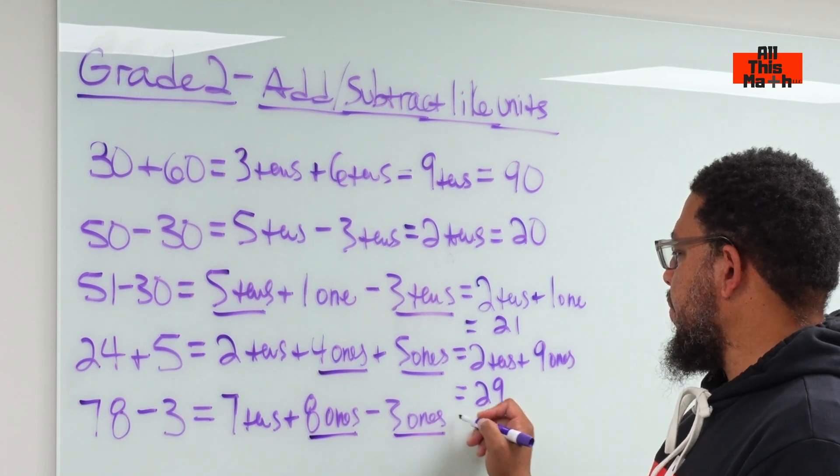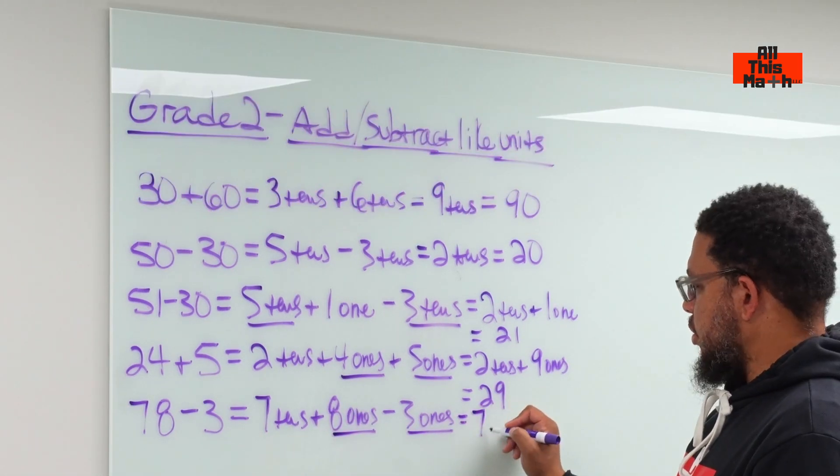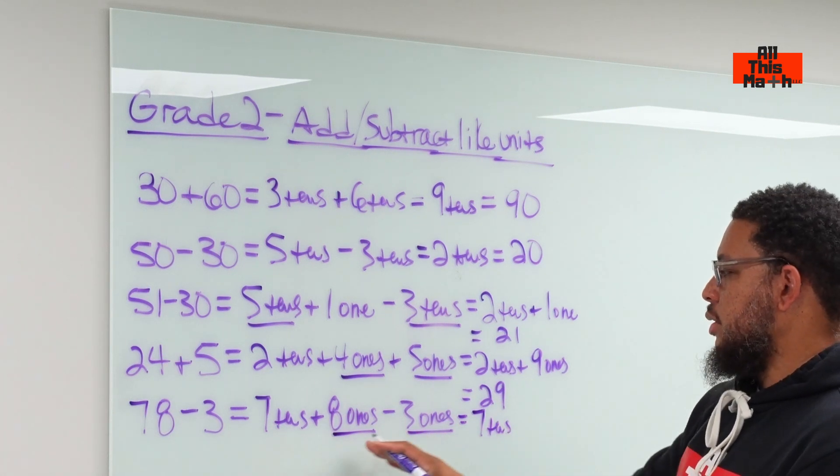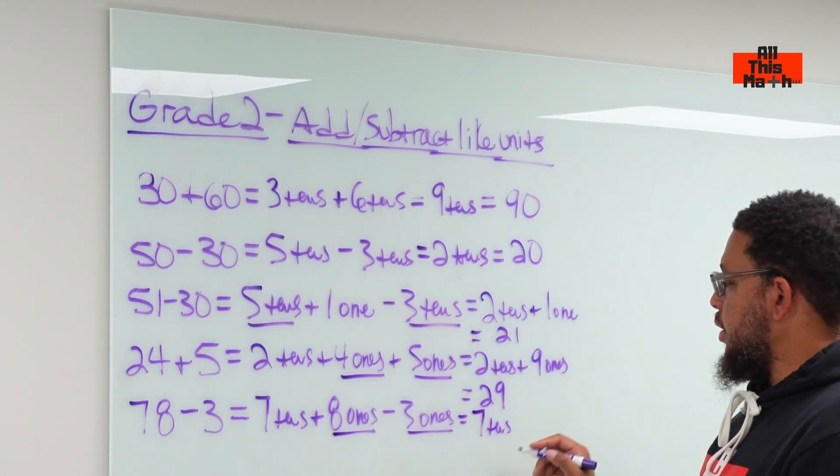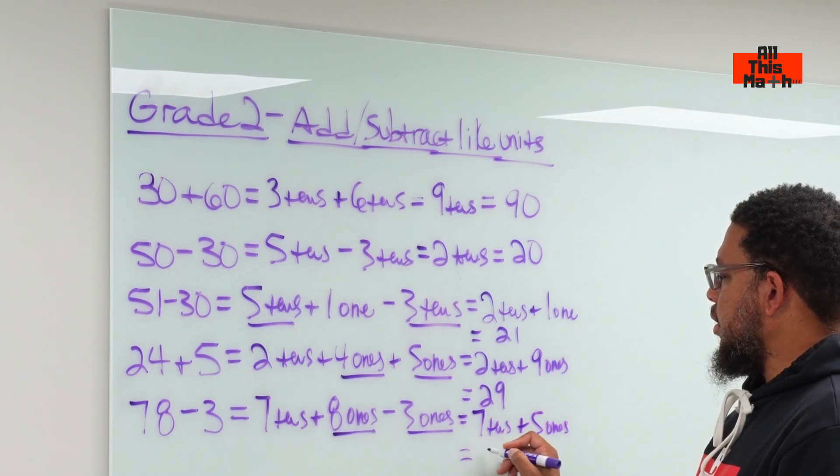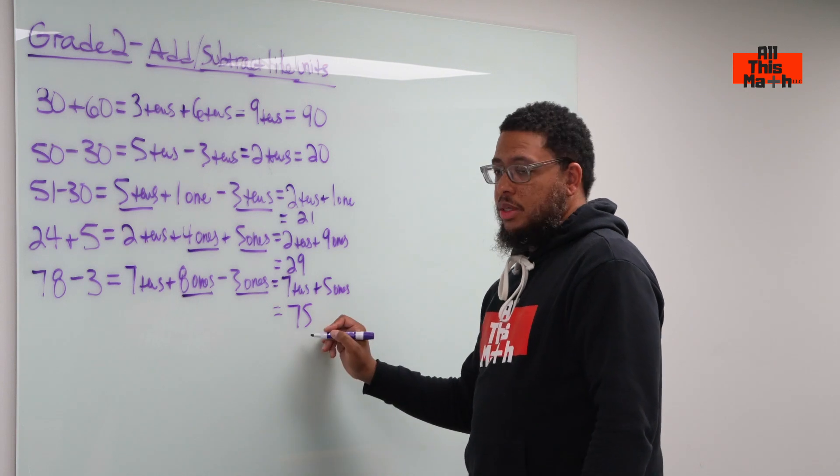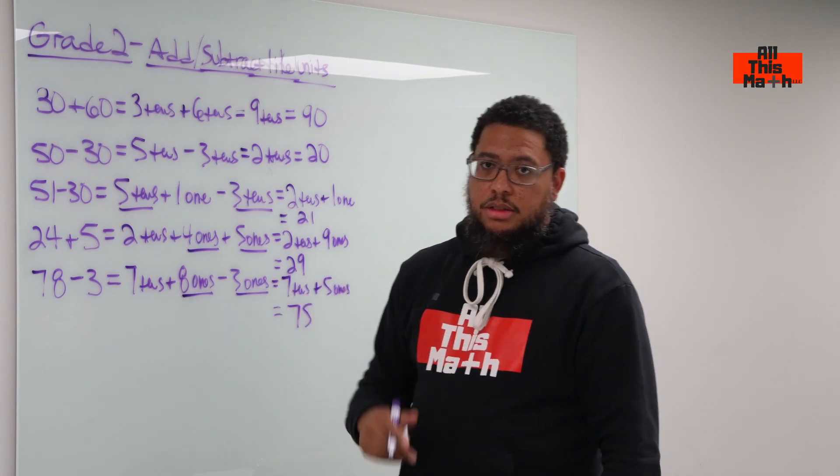So we got eight ones and three ones. The seven tens stays as seven tens, but eight ones take away three ones leaves you with five ones. And that's going to be 75 because seven tens is 70 and five ones is 5. And that's today's lesson.